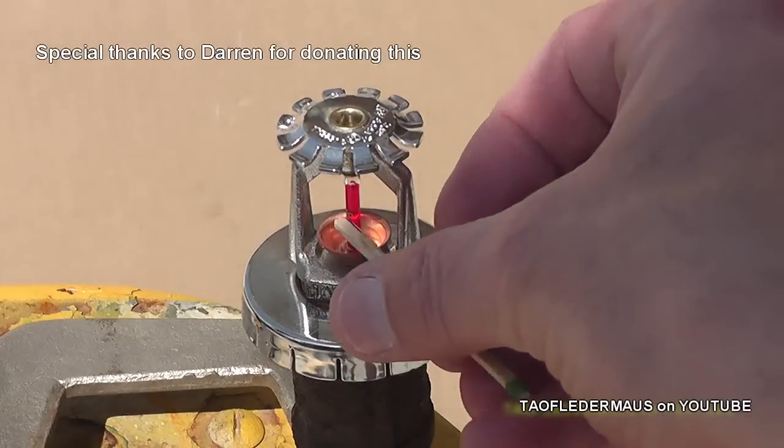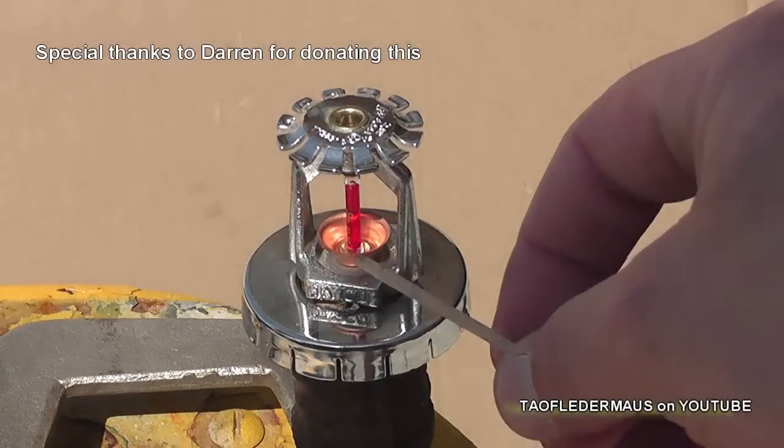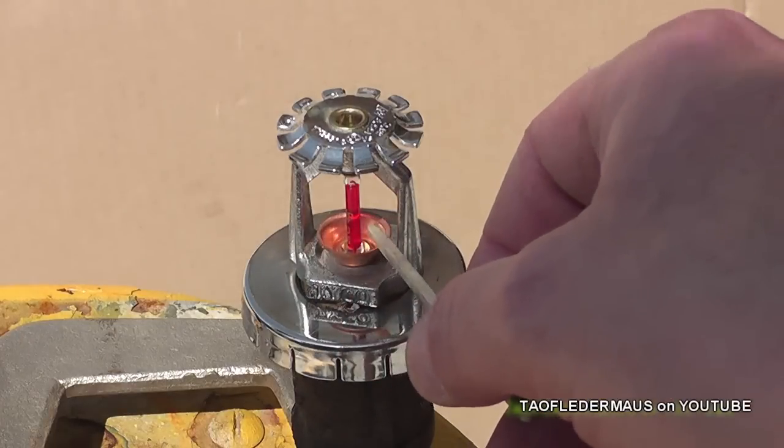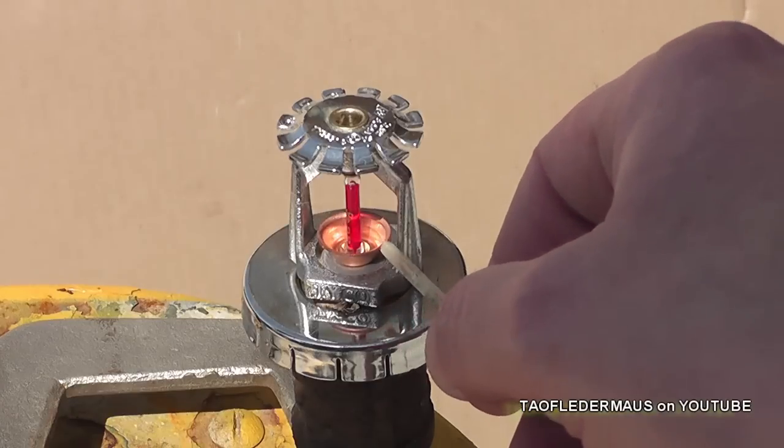I'm not sure what the fluid in there is. It could be just like an alcohol, something that has a real low freezing point so you don't break it if they're outdoors or exposed to cold weather.